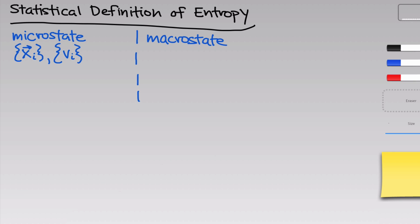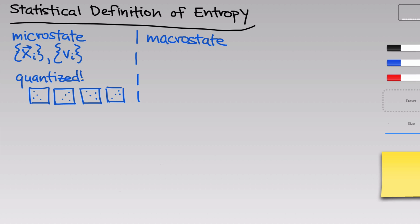The microstate consists of all of the microscopic positions and velocities of all of the particles within the system. For example, for an ideal gas, if we were to sample or take a photo of an ideal gas system over time, we would see the particles with different positions and different velocities pretty much in every snapshot. One important thing to recognize about microstates is that microstates are quantized.